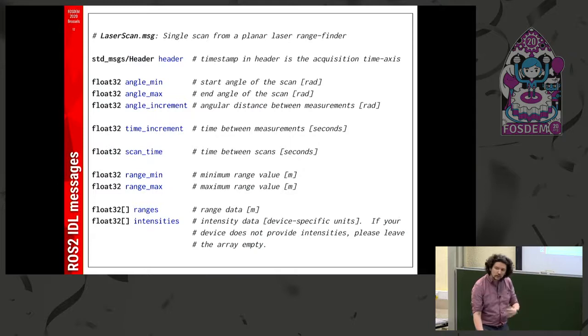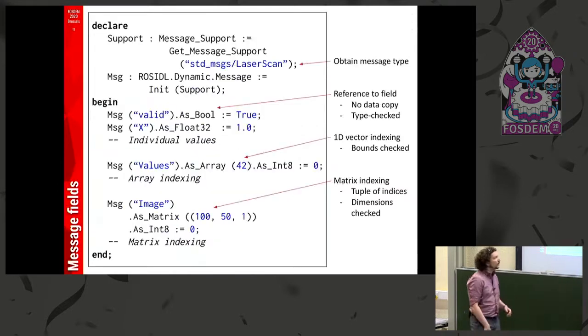Now, moving a bit into how this looks in Ada, this is how you would use a message in Ada. You access the fields by name right now, you specify the type that you must know, although you can do introspection, and everything in Ada spirit is type checked, and bounce checked, and so on.